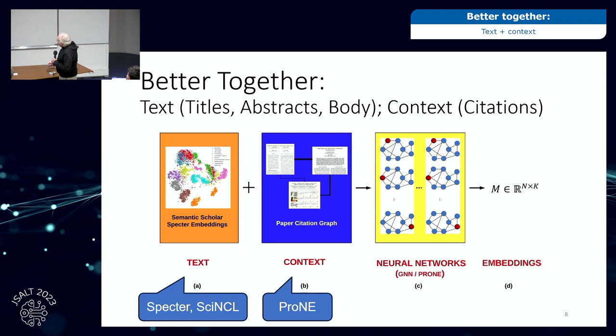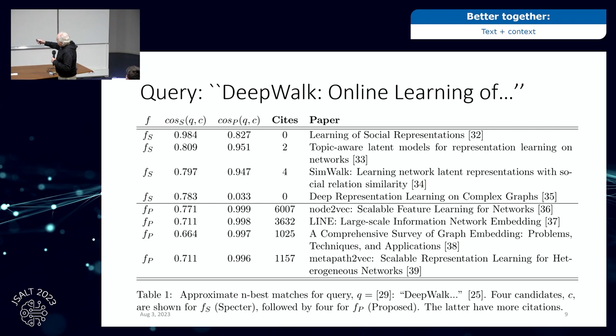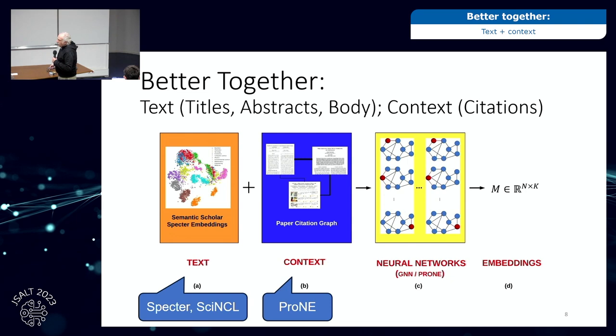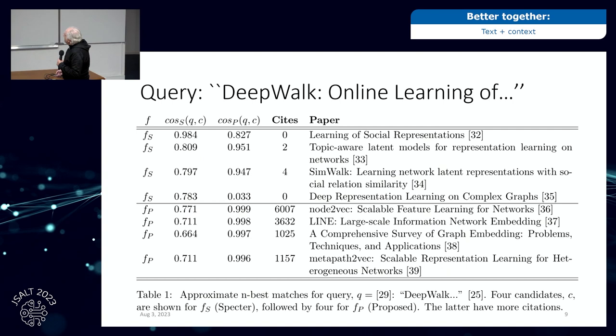I'm showing you some text, which is the author's perspective. ProNE is looking at the links — the audience perspective. We're arguing there's a 'better together' story and you should use both. There are some interesting questions about how to combine them, and I'll let others on the team discuss that.